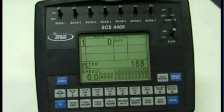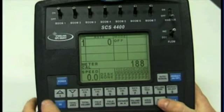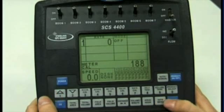If your Goldacre sprayer is fitted with a hydraulic drive liquid pump, it will have an RPM readout that needs to be monitored via the SCS4400 controller. To do this, we have to go in and set a calibration figure to bring up the RPM readout.